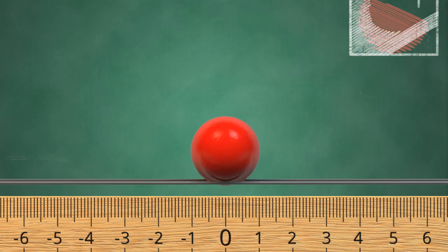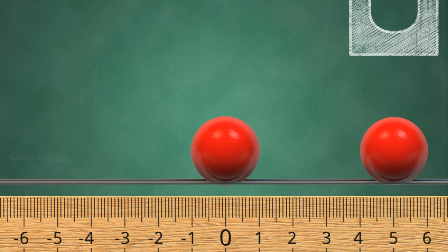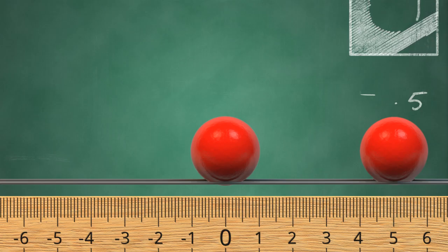If we drop another ball somewhere else, we can compare the locations of the two balls. This new ball has a constant position equal to positive five centimeters, because it is five units to the right of the origin, at zero.